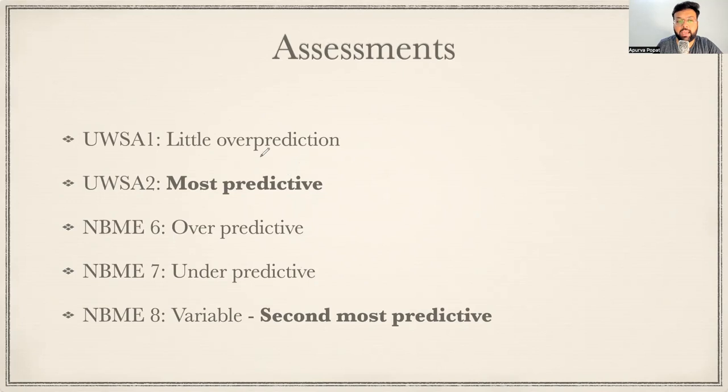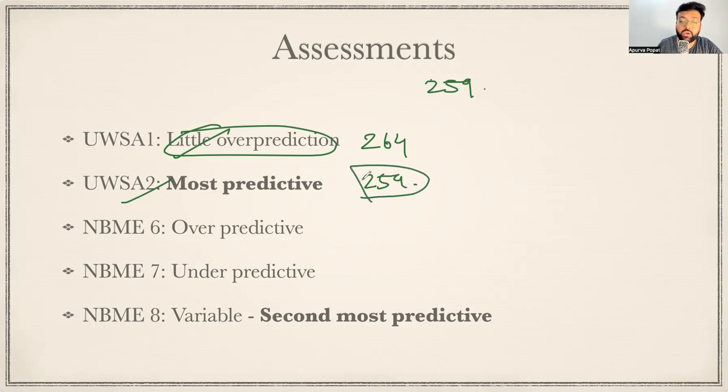Which assessments to be given? I gave UWSA1, I gave UWSA2. SA1 was a little over predictive for me. For example, if I scored 259 on Step 2, I got 264 on SA1 and I got 259 on my SA2. According to the data and even my scores, SA2 was the most predictive. Any score, I would say if it is 250 plus, even if you are aiming for 260s, that's okay. Any score 250 plus is in a good spot to give off your exams and perform well.